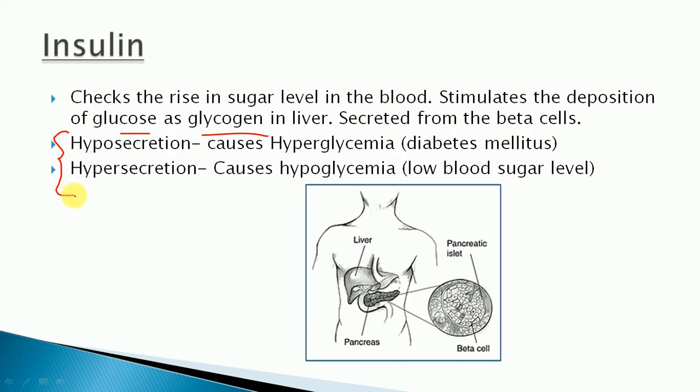When insulin is hypo-secreted, meaning there is a deficiency of insulin, the glucose level in the blood increases. This results in a condition called hyperglycemia, also known as diabetes mellitus — it is the increase in blood glucose level due to insufficient insulin.